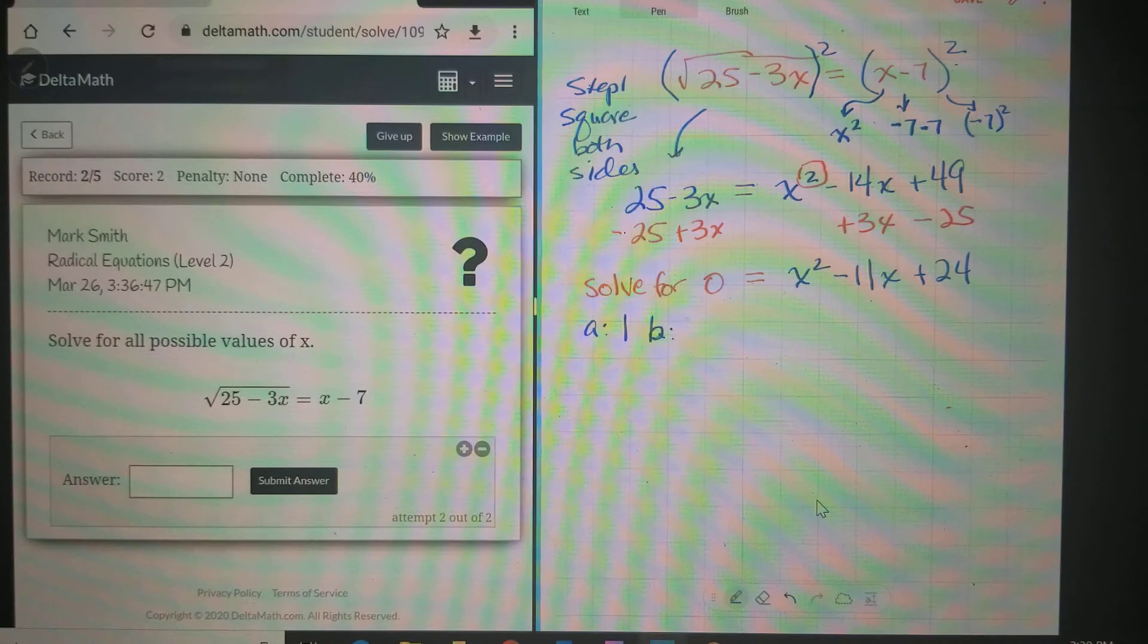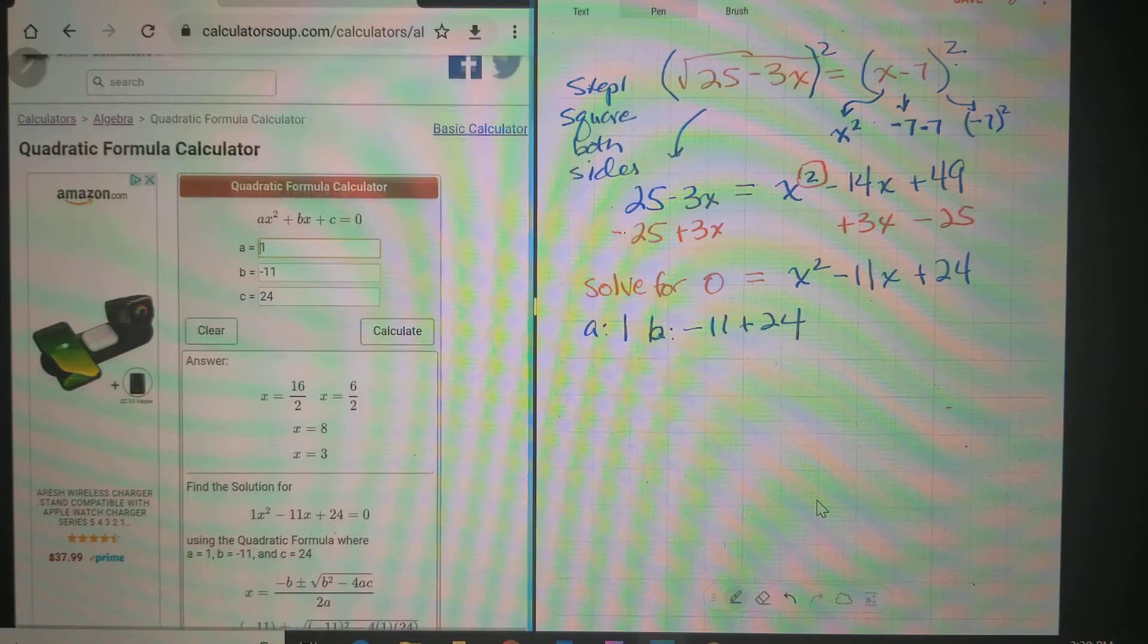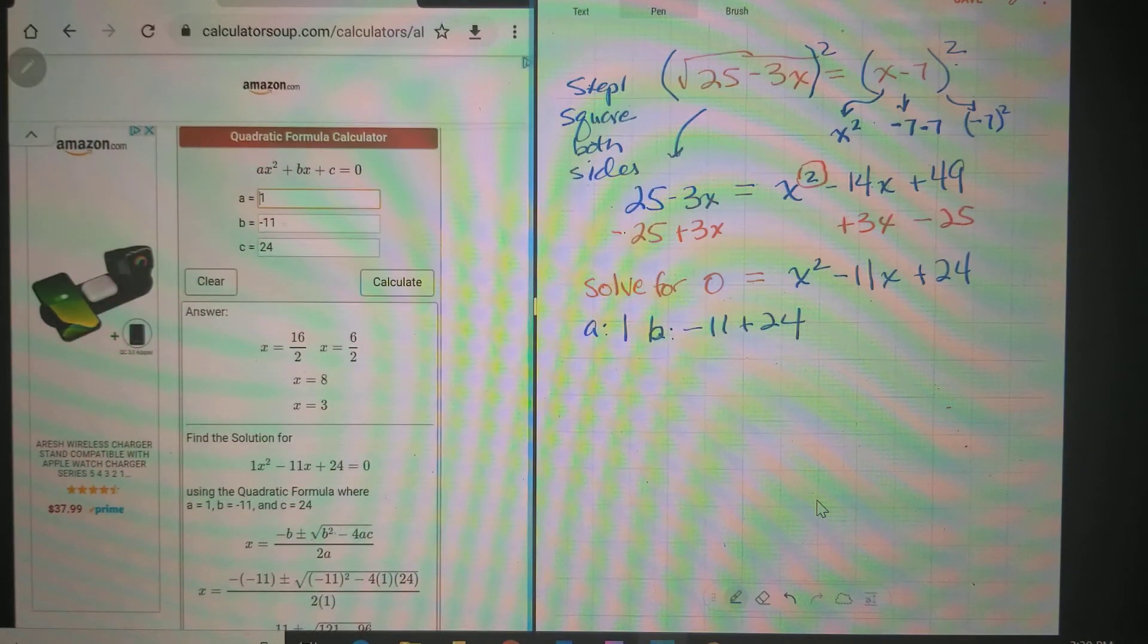Which is solve for x. So negative 11 and positive 24. I already put that in over here just to save a little time. So a is 1, b is -11, and c is 24.